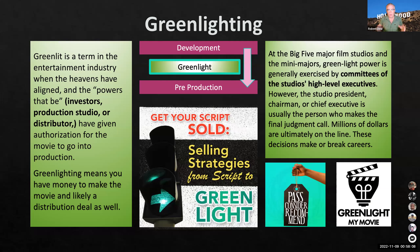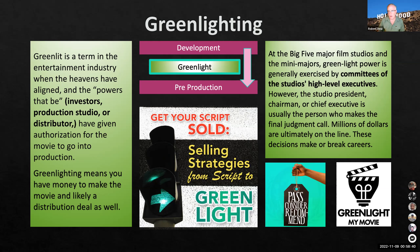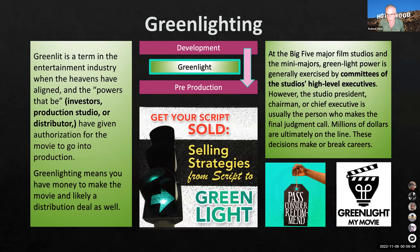Green lighting is a happy day in the life of a filmmaker — when your film gets green lit, you go from development to pre-production. The key thing is you have money. Very often included in this is a distribution deal, meaning they already know the film has a way to make money. At the five major studios, green lighting is usually held by high-level executives, though the chairman or CEO has the final call. Millions of dollars are on the line, and a flop can be career-ending.